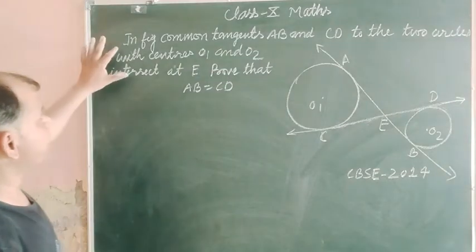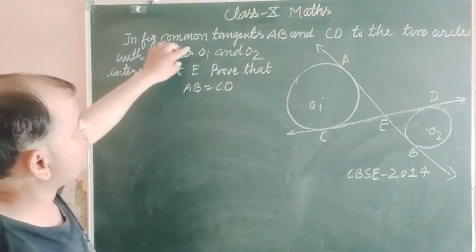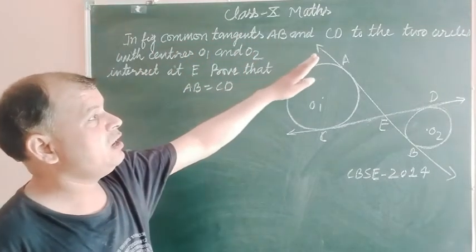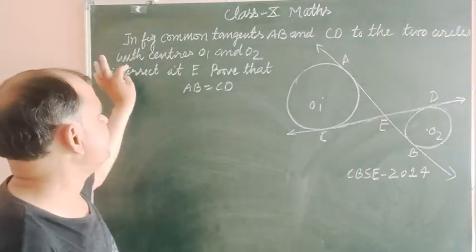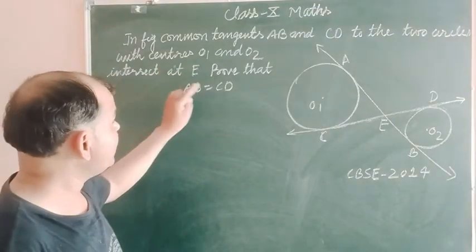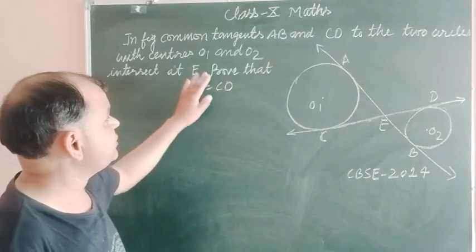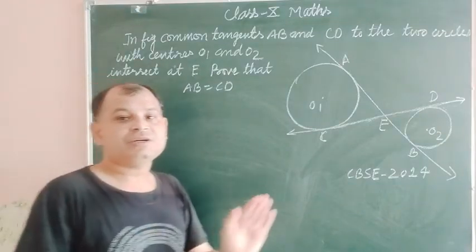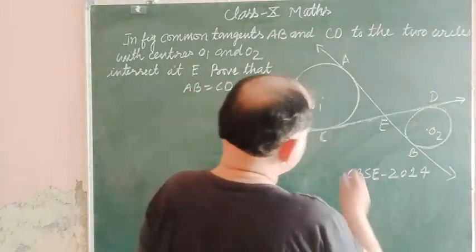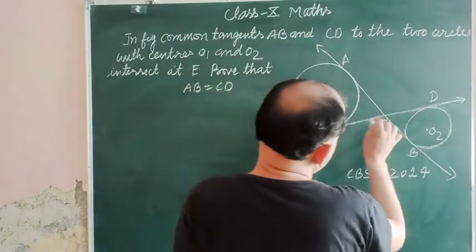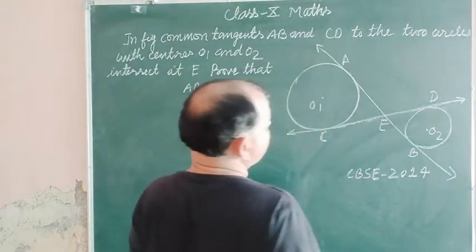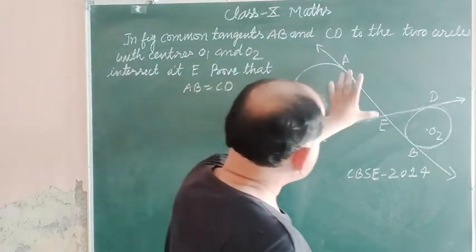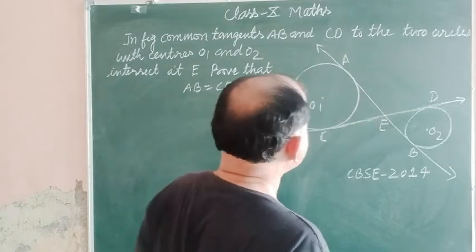The question says that in the figure, common tangents AB and CD to two circles with centers O1 and O2 intersect at point E. We have two common tangents of the given two circles whose centers are O1 and O2 which are intersected at point E. We want to show that AB is equal to CD.